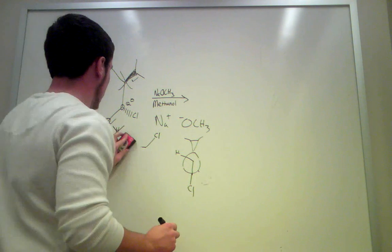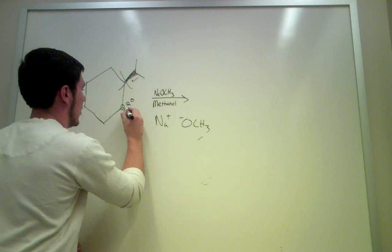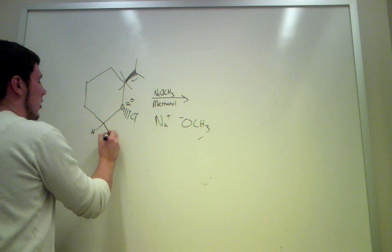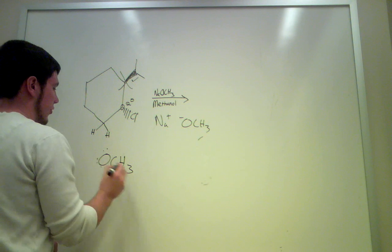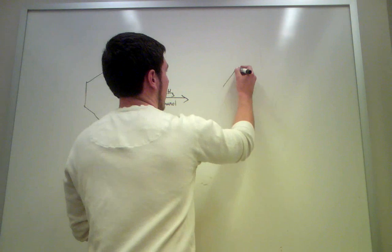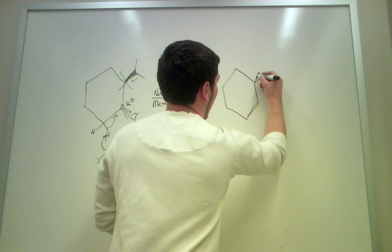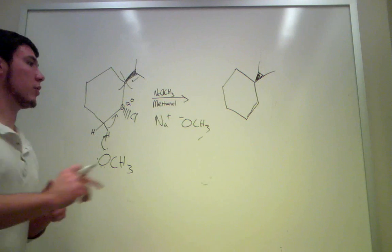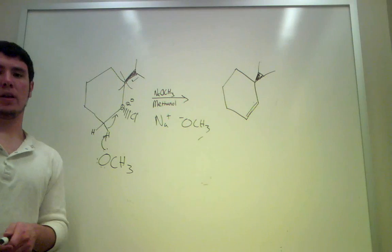So what our mechanism is going to be is, you've got these two carbons or these two hydrogens hanging off here. You've got your OCH3 just hanging out here. It's going to come up, snag this hydrogen. This electron is going to move over here. And that's what you're going to be left with. There's your product for this.